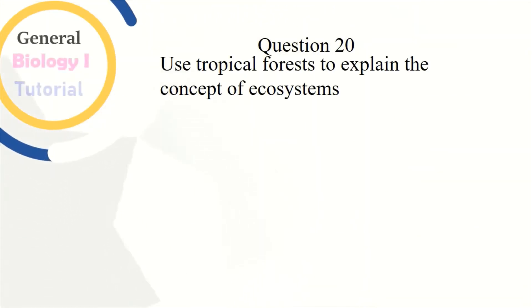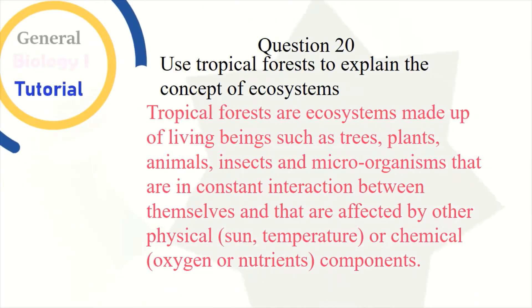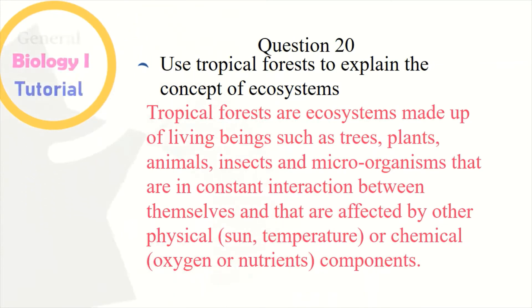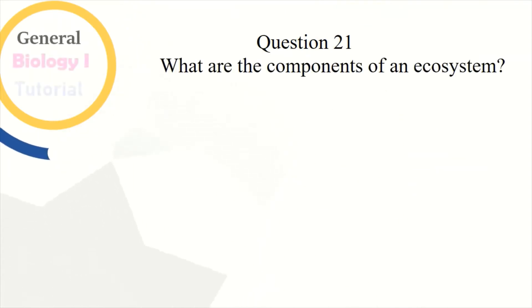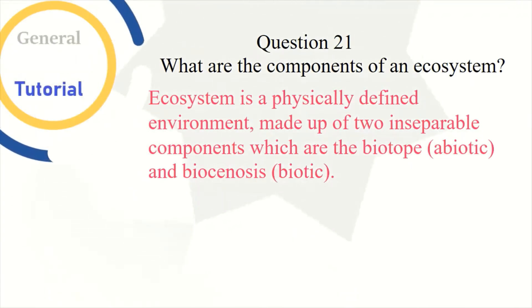Question 20: Use tropical forests to explain the concept of ecosystems. Tropical forests are ecosystems made up of living beings such as trees, plants, animals, insects, and microorganisms that are in constant interaction between themselves and that are affected by other physical (sun, temperature) or chemical (oxygen, nutrients) components. Question 21: What are the components of an ecosystem? An ecosystem is a physically defined environment made up of two inseparable components: the biotope (abiotic) and the biocenosis (biotic).